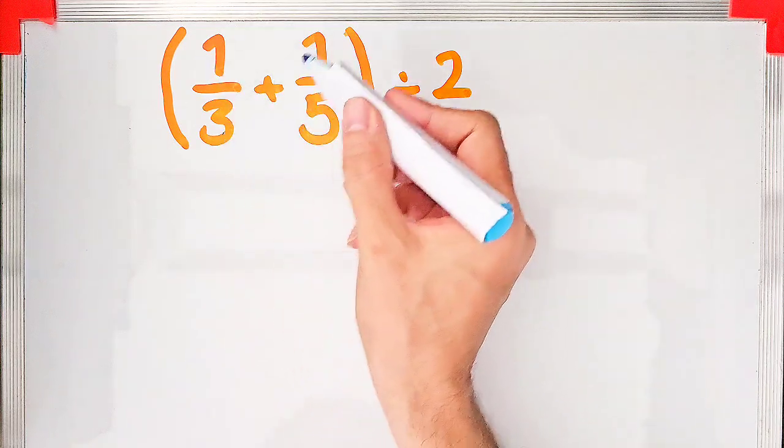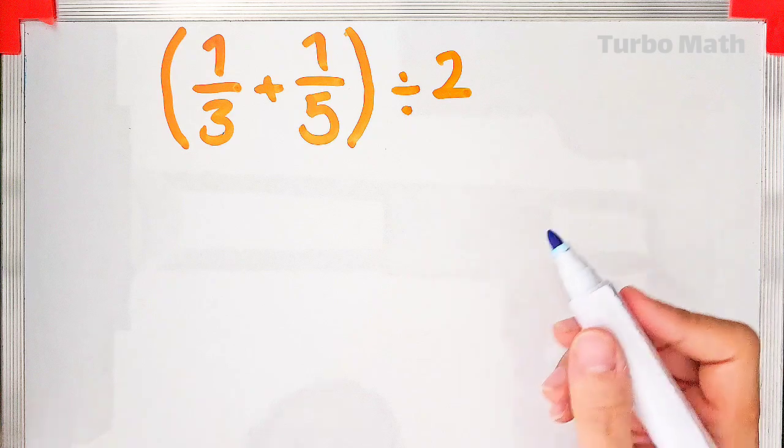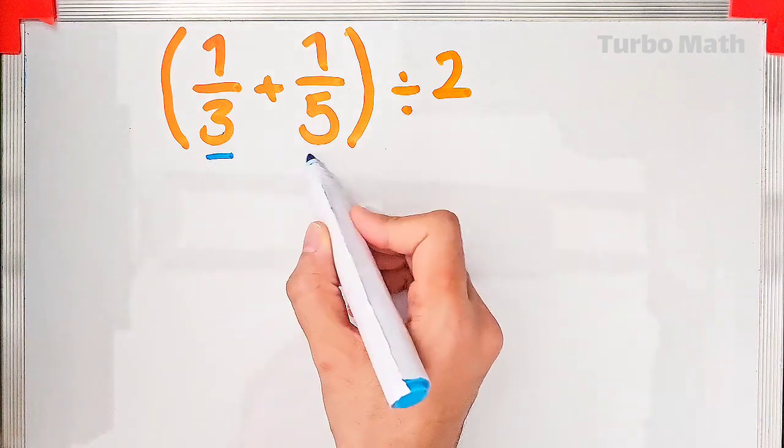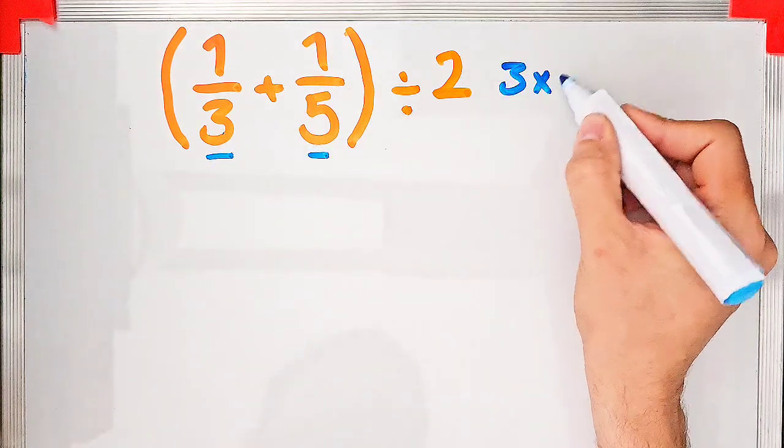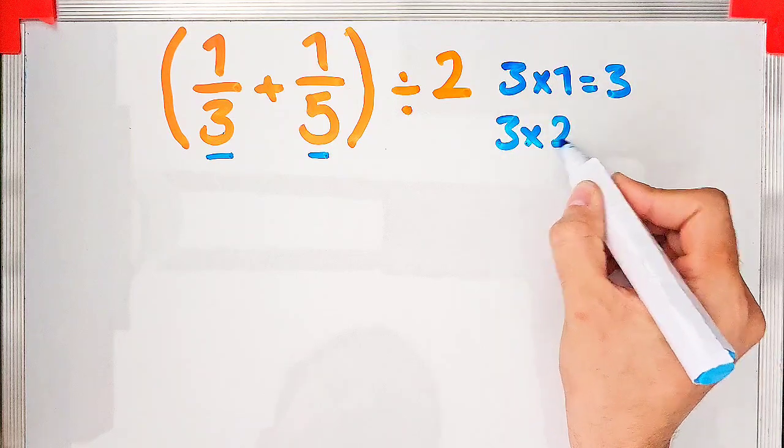Hi guys, welcome to this video. One third plus one fifth divided by two - what is the value of this question? When adding fractions, the first thing we need to do is find the common denominator. First, let's list the multiples of both numbers and find the smallest common multiple between them.